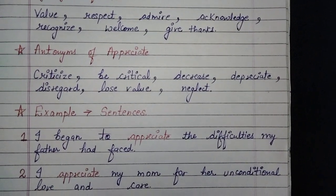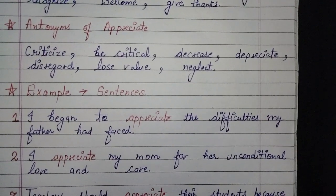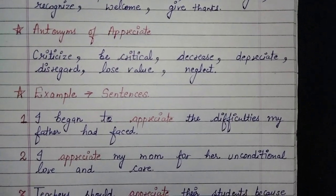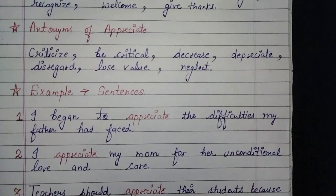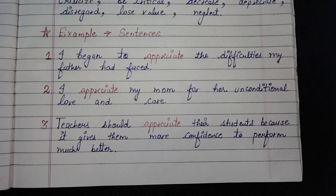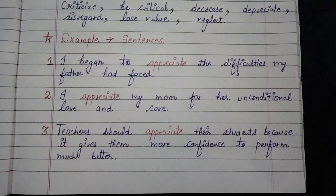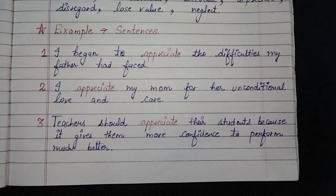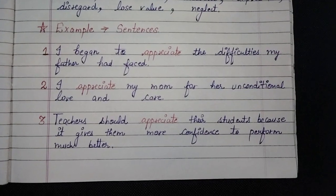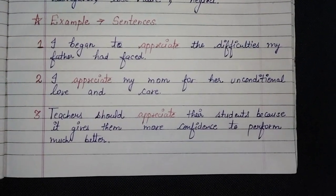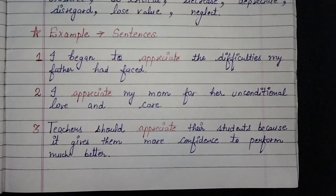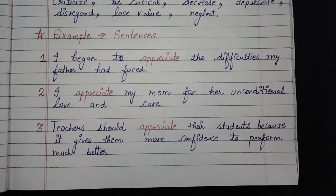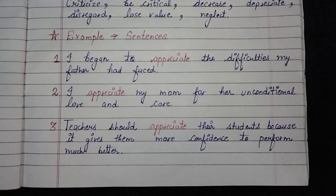Now we move on to example sentences, through which we will get more clarity and understanding about this word 'appreciate,' so we will easily use this word in our English speaking and writing. In English vocabulary, jab meaning achhe se samajh mein aata hai, tabhi hume ye samajh aata hai ki hume isko use karna hai, kahan kar sakte hain, kahan nahin karna hai.